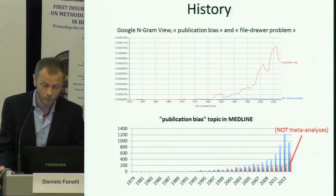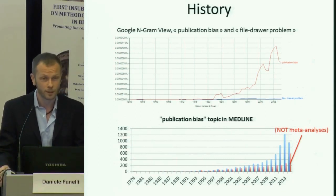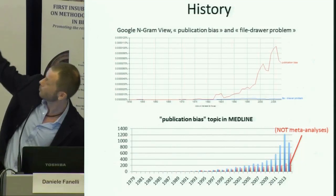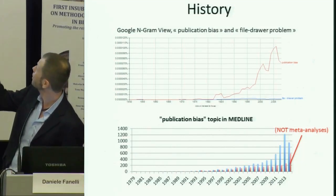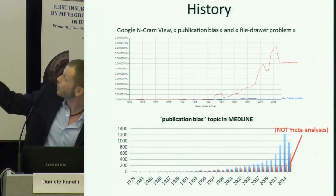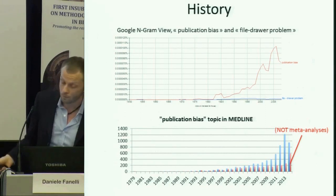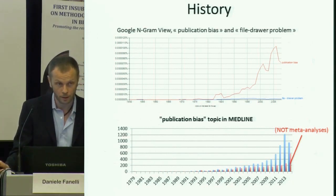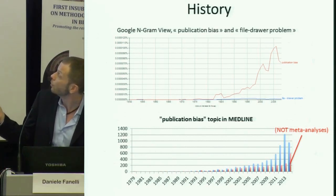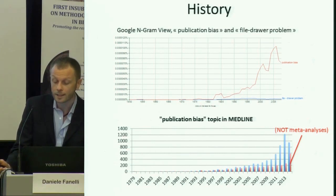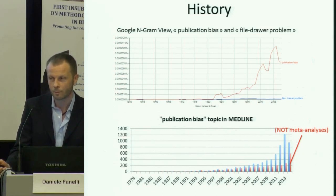Here you have a Google Ngram view with the words 'publication bias' and 'file drawer problem'. The file drawer problem is not actually that common at least in books, whereas publication bias has grown considerably. You can appreciate how the interest has not just grown but has experienced periods in which it was more openly talked about. The history of the subject, even in disciplines less perhaps than biomedical research, such as psychology, is that it has been known and discussed for a long time with peaks and valleys.